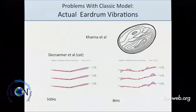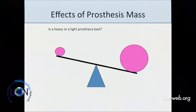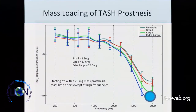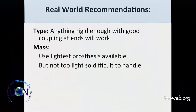If you make the cap size too small, you may end up sampling a vibration node at higher frequencies, so it has to be above a certain size. Prosthesis mass doesn't matter much — the stiffness portion makes no difference, but with a heavier prosthesis there's about a 5–6 dB drop at high frequencies. In the real world, anything rigid enough works, but it's the coupling at the ends that make the difference — whether you end up with a rotational vector or not.